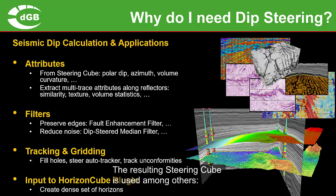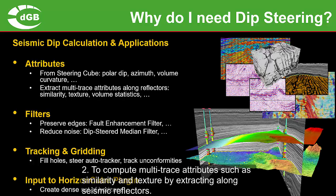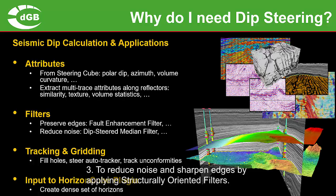The resulting steering cube can be utilised for many purposes, including computing attributes like polar dip, azimuth, and volume curvature directly from the steering cube, and to compute multi-trace attributes such as similarity and texture by extracting along seismic reflectors.